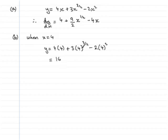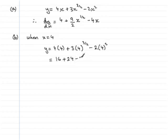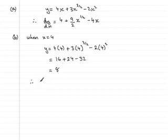Let's work this out: 4 times 4 is 16. For 4 to the power 3/2, take the square root of 4 which is 2, then cube it which is 8, then 3 times 8 is 24. So we have 16 plus 24. 4 squared is 16, and 2 times 16 is 32, minus 32. So 16 add 24 take 32 comes to 8.